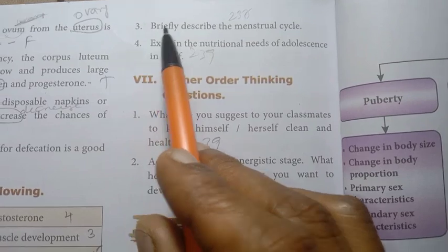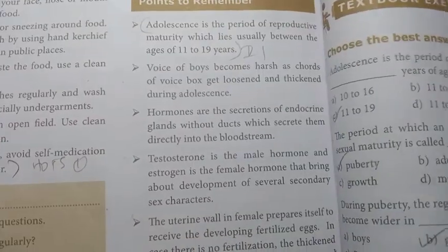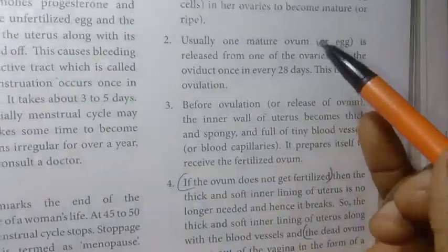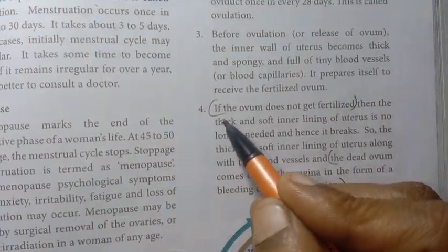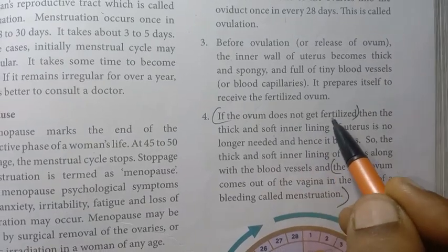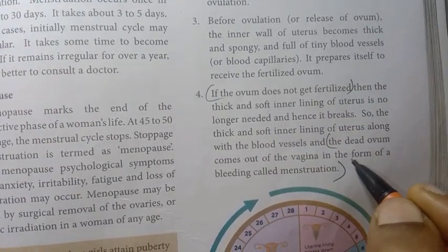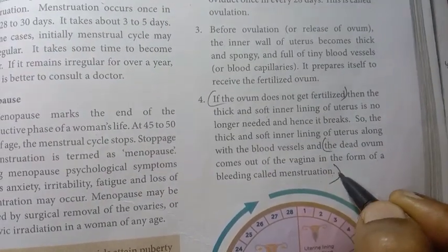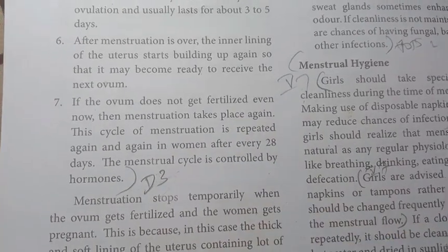Third question: Briefly describe the menstrual cycle. Page number 237. First point, second, third, fourth point — if the ovum does not get fertilized, the dead ovum comes out of the vagina in the form of bleeding called menstruation. Then fifth, sixth, and seventh points. That is the detail for the third answer.